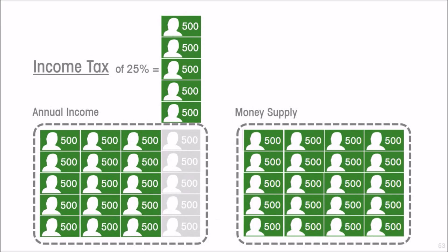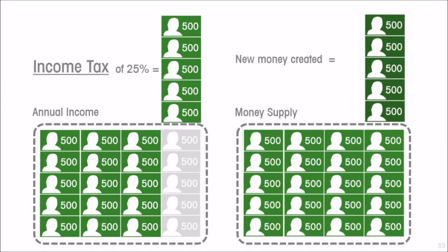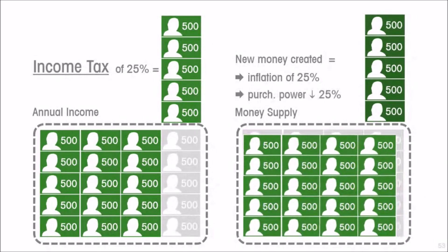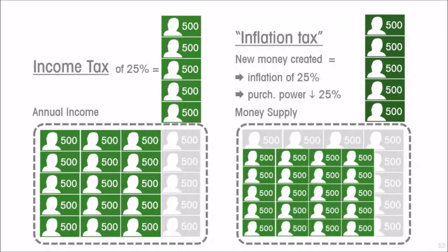But as an alternative, the government might not want to levy an income tax — elections are coming up and it's an unpopular move. So the government asks the central bank to create new money, to print up $2,500 of new money and send it over to the government to spend. But that's going to create inflation of ultimately 25%, which means that even though the economy's citizens still nominally have $10,000 of money, its purchasing power will have shrunk by 25% — to what $7,500 could have bought before the inflation.